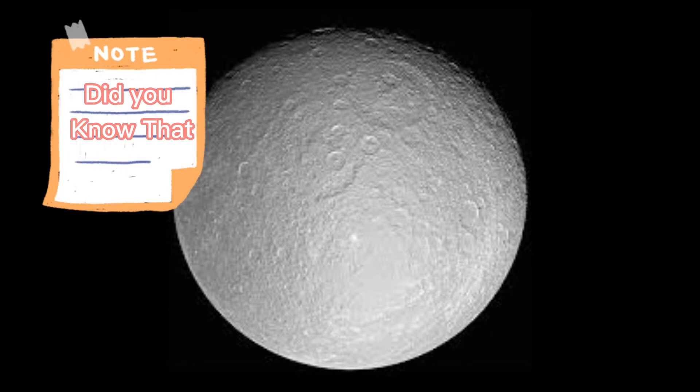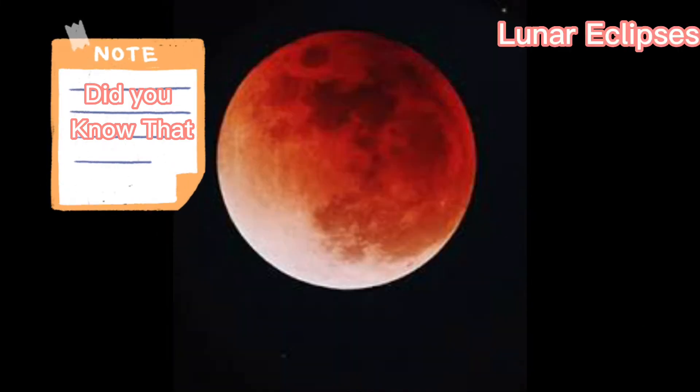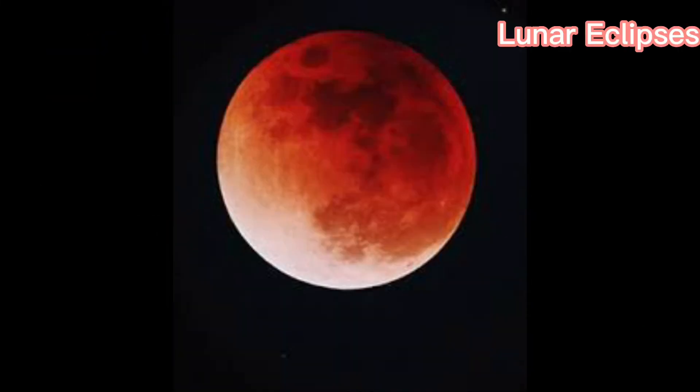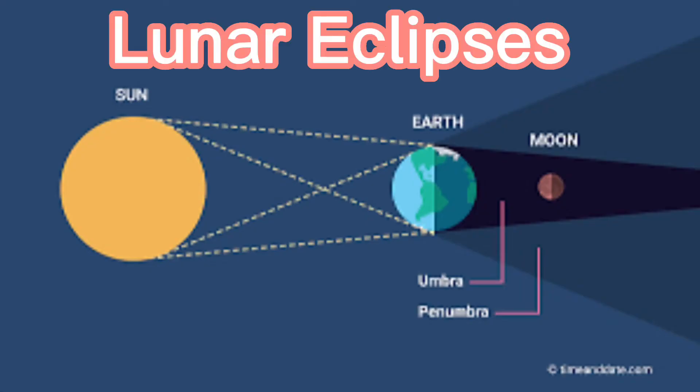Even at the full moon, the earth is positioned in between the sun and the moon. It is only when there is a lunar eclipse that the earth is exactly in line with the sun and the moon.